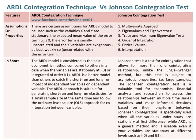Whereas, the Johansen test is a test for cointegration that allows for more than one cointegrating relationship, unlike the Engle-Granger method. However, this test is subject to asymptotic properties, that is, large samples. The Johansen cointegration test is a valuable tool for economists, financial analysts, and researchers to assess the relationships between multiple time series variables and make informed decisions based on their long-term behaviour.